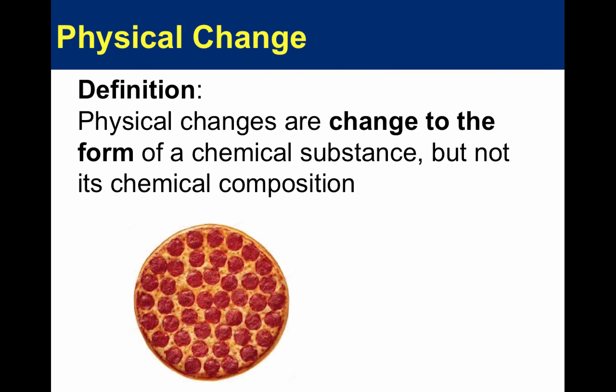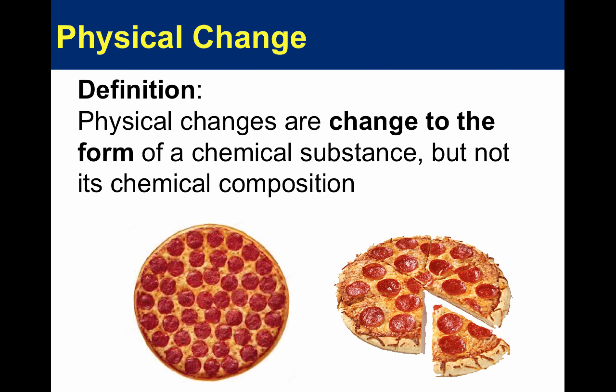By definition, physical changes are changes or alterations to the form of a chemical substance but not its chemical composition. Take this pizza for instance — if we were to cut it into eight pieces, we're simply changing its form. We are not changing anything about the pizza. All of the properties remain the same; on a molecular level we haven't changed anything, we've only changed its form.